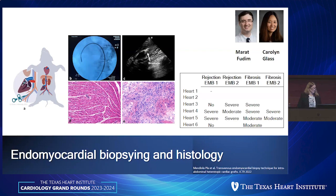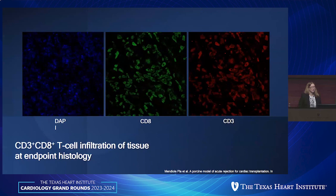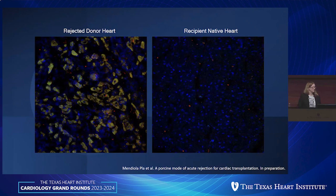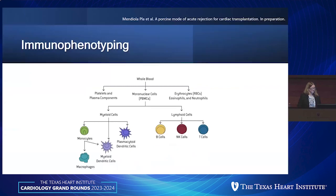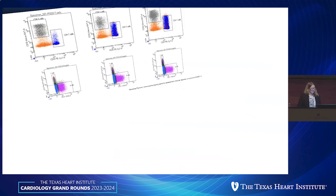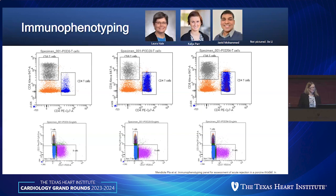Michelle spent a lot of time finding reagents to look at different immune cells — working in the pig is more difficult for finding reagents than in non-human primates or humans. She found that this rejection looks like a T-cell infiltration in the tissue at the endpoint. Comparing the rejected donor heart to the recipient native heart confirms this is definitely a T-cell mediated rejection. Michelle also developed immune profiling for different immune cell populations, showing an increase in T-cells as rejection proceeds.